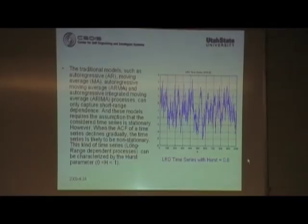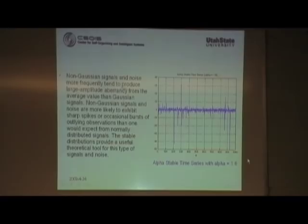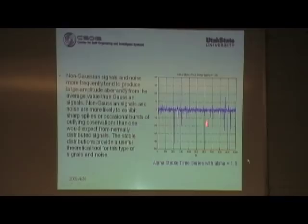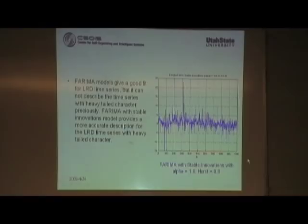Now let's introduce long-range dependence. Non-Gaussian signals more frequently tend to produce large amplitude deviations from the average value than Gaussian signals. Non-Gaussian signals are more likely to exhibit sharp spikes. We can see that this time series with alpha equals to 1.6 shows such sharp spikes. ARFIMA with stable innovation is a good model to describe the Great Salt Lake elevation time series, because it can capture both the long-range dependent character and the heavy-tail character.